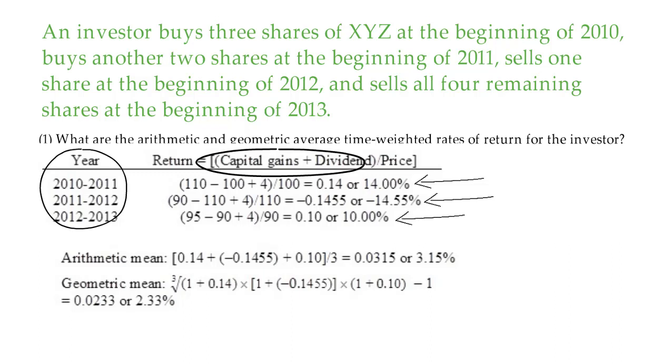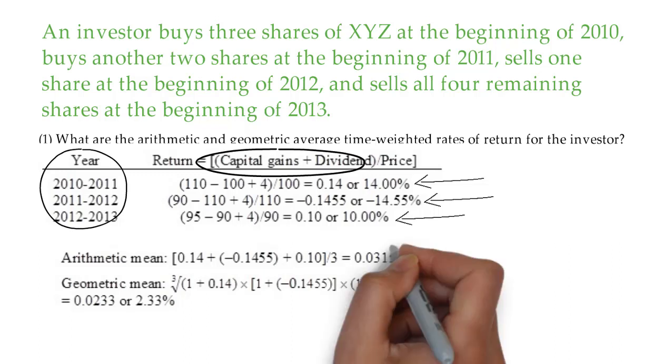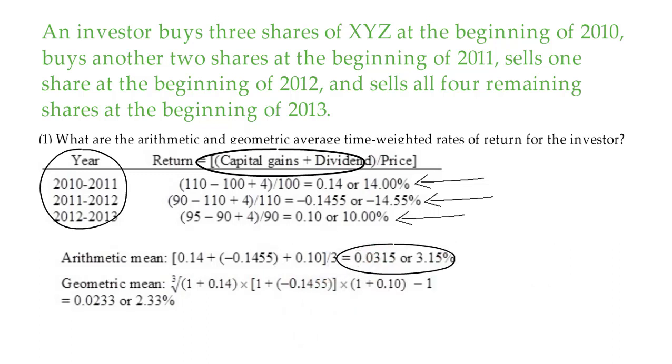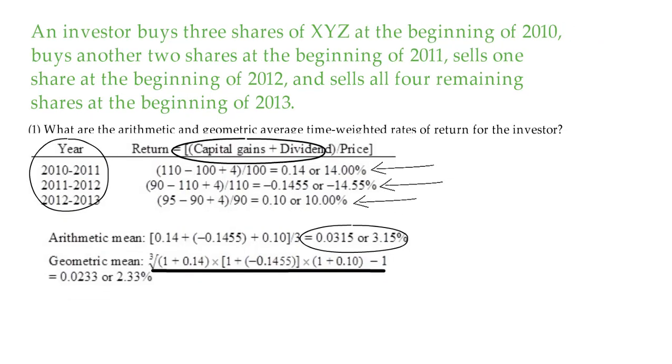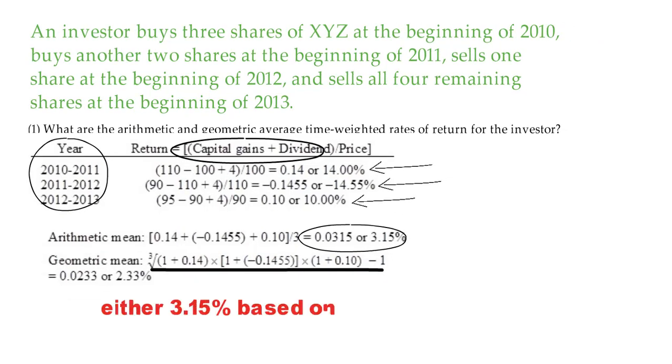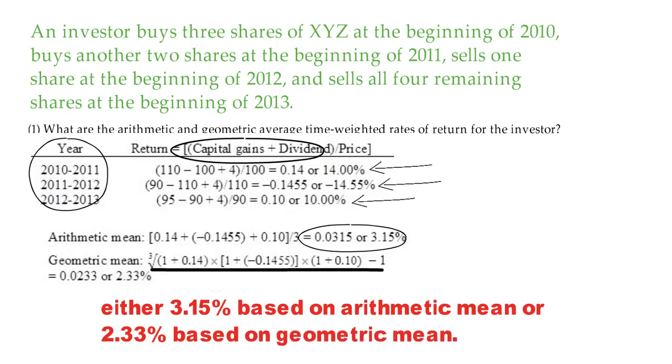Now you have three returns. In order to calculate the arithmetic mean, you simply add these three returns up and divide by 3 and you get 3.15%. If you want to apply the geometric mean technique, you add 1 to each return and then multiply these returns and finally take cube root minus 1, and that gives you 2.33%. So your return on investment is either 3.15% based on arithmetic mean or 2.33% based on geometric mean.